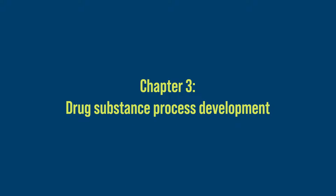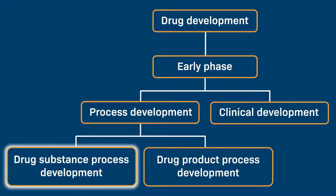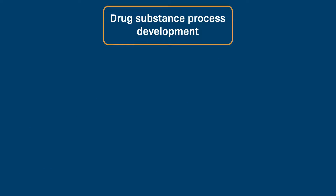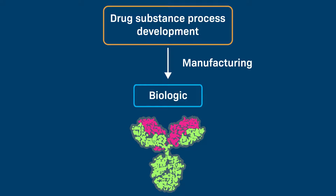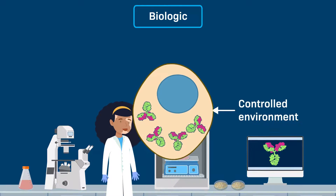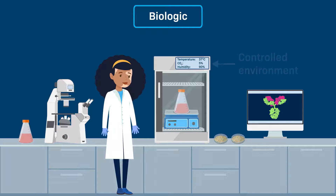Chapter 3: Drug Substance Process Development. Now that we have outlined the drug development process, let's focus on the components of drug substance process development featured in this pathway. In particular, we'll take a closer look at how drug substance process development is carried out ahead of manufacturing a biologic. Biologics are generally produced in living cells that have been adapted to grow in a controlled environment outside of a living body.